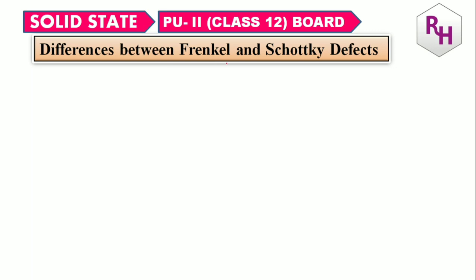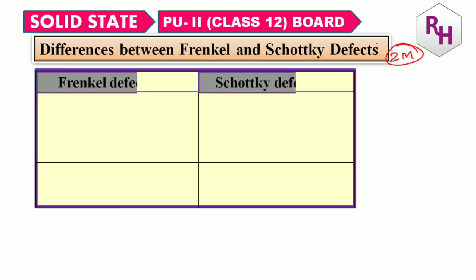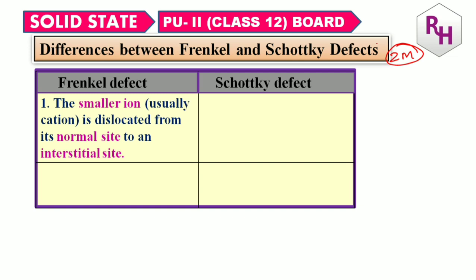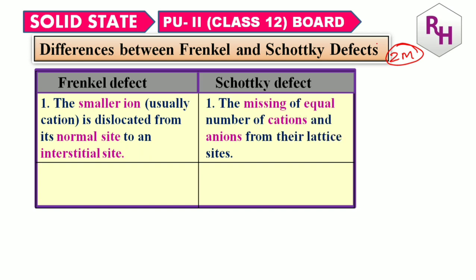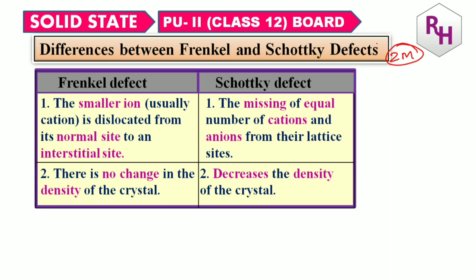Now we will see the differences between Frenkel and Schottky defect. In Frenkel defect, the smaller ion — usually the cation — is dislocated from its normal site to an interstitial site; there is no change in density. In Schottky defect, equal numbers of cations and anions are missing — there is a decrease in density. Remember: Frenkel defect has no change in density; Schottky defect decreases density.